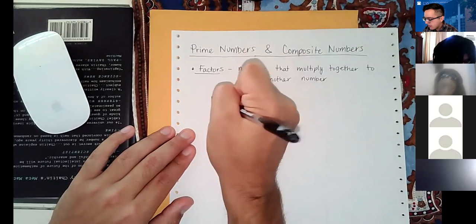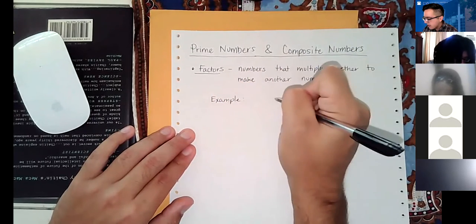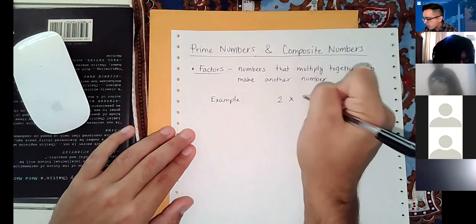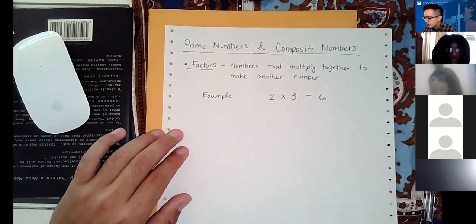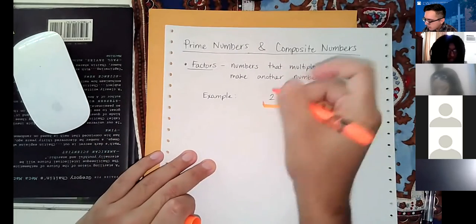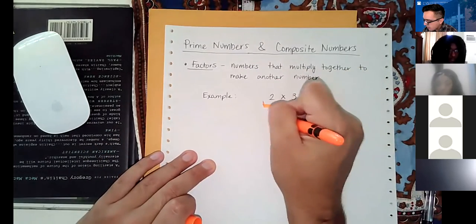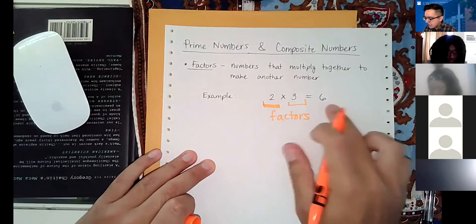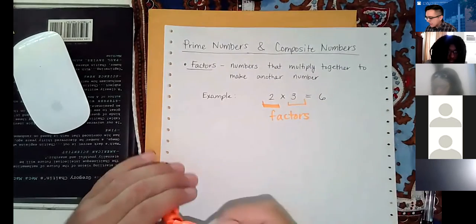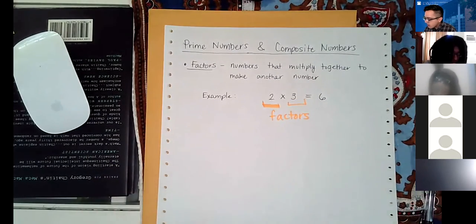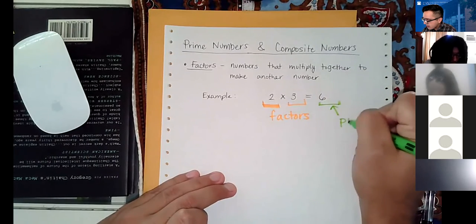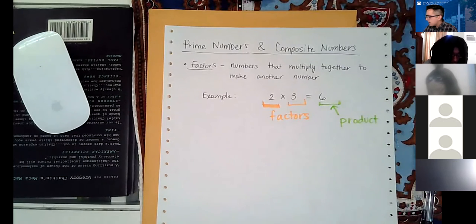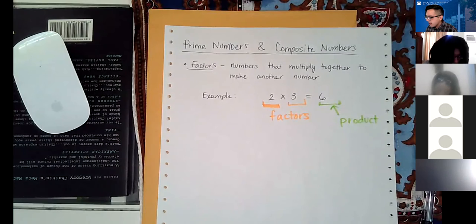For example, two times three equals six. Two and three are called the factors of six because they multiply to make the six. We call the result of the multiplication the product. So if you multiply two or more numbers, the result will be called the product.